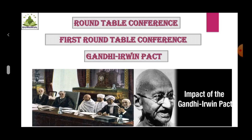A pact was signed between Mahatma Gandhi and Viceroy Irwin, known as the Gandhi-Irwin Pact. According to this pact, the British government assured that a system of responsible government would be included in the proposed constitution of India. Consequently, the Indian National Congress withdrew the Civil Disobedience Movement and agreed to attend the Round Table Conference.